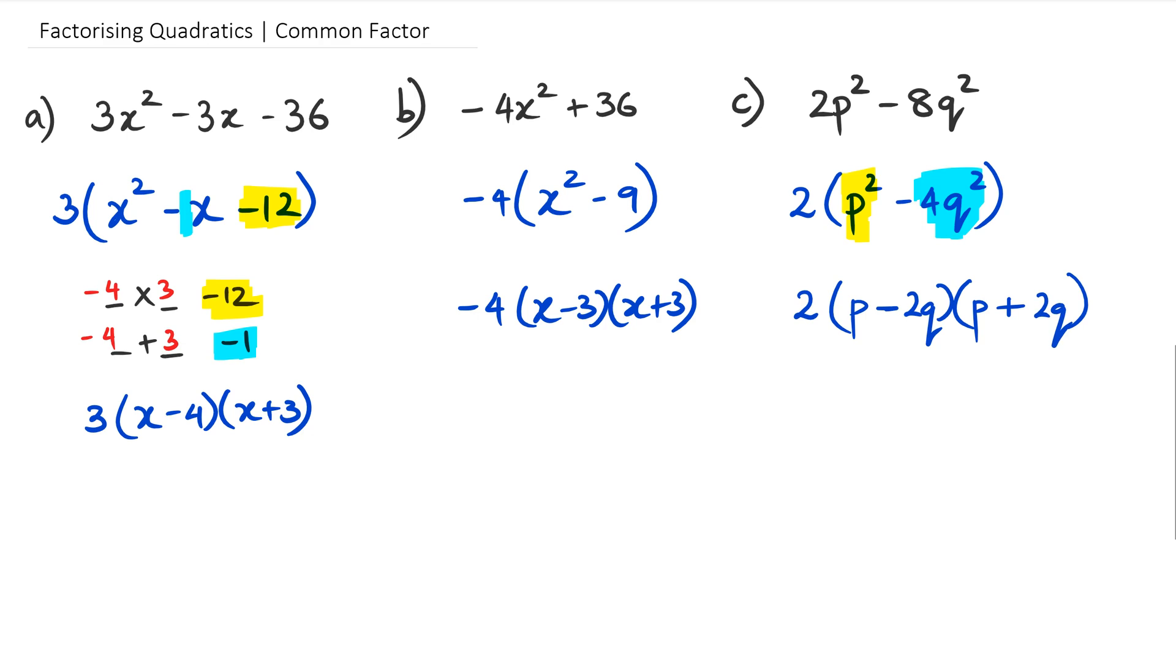So that's pretty much how we look at factorizing quadratics when your x squared coefficient is not 1, but also there are some common factors to make things a little bit easier. Now in the next video in this series, we'll be looking at when there is no common factor and when the coefficient of x squared is actually bigger than 1.